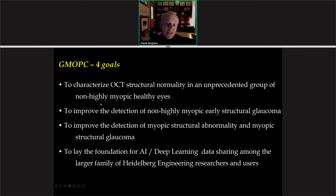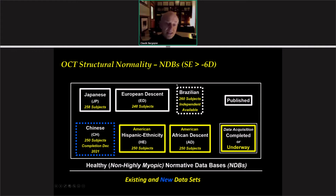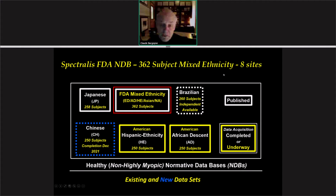There are four principal goals. First, to characterize OCT structural normality in an unprecedented group of non-highly myopic healthy eyes. Second, to improve the detection of non-highly myopic early structural glaucoma. Third, to improve the detection of myopic structural abnormality and myopic structural glaucoma. And finally, to lay a foundation for artificial intelligence and deep learning data sharing among the larger family of Heidelberg Engineering researchers and users. The normative databases include published Japanese, European descent, and Brazilian databases. There are also American Hispanic ethnicity and African descent data sets close to completion, and a Chinese normative database is planned.